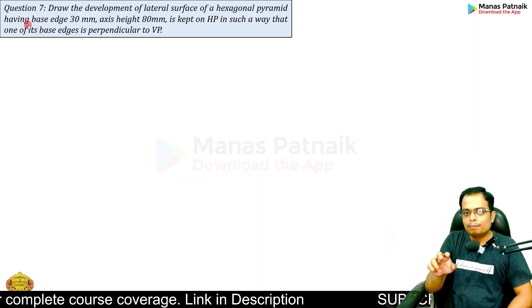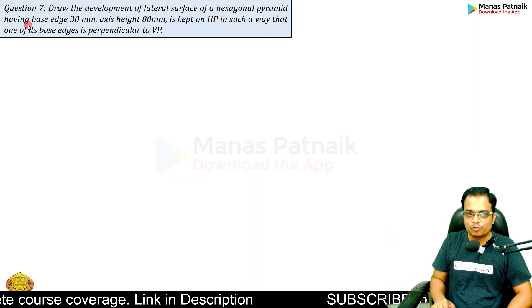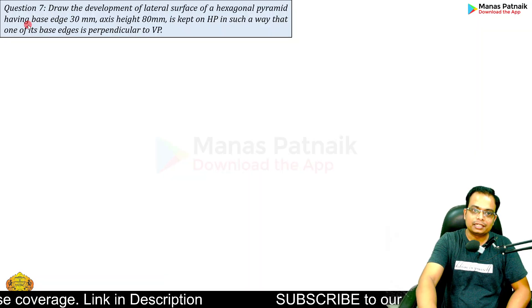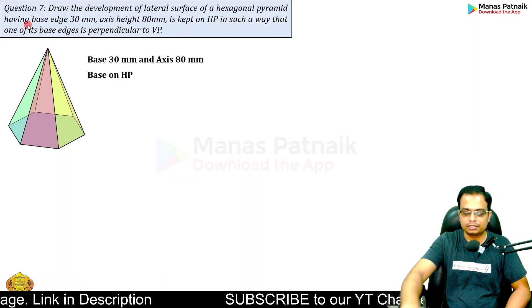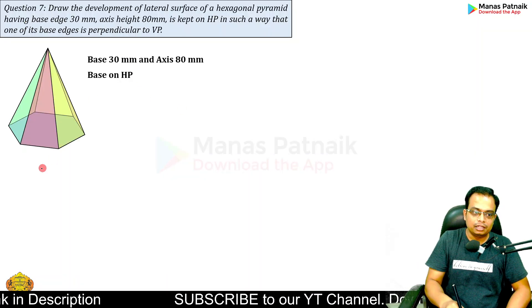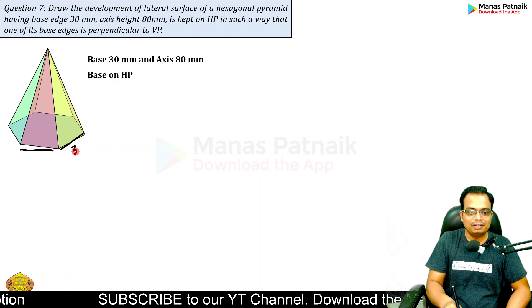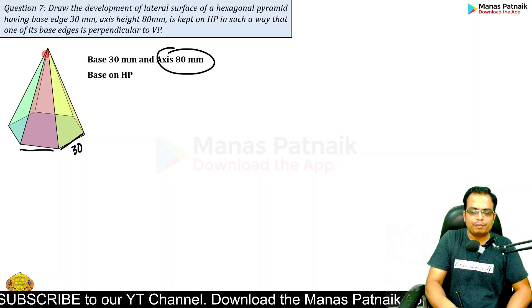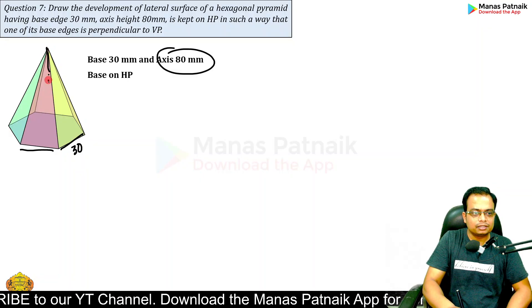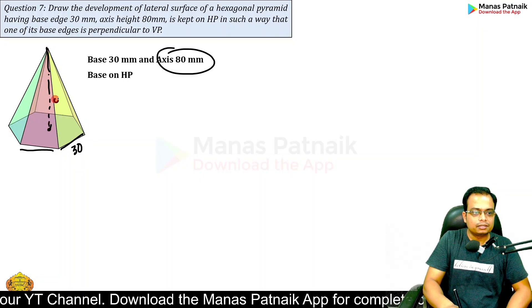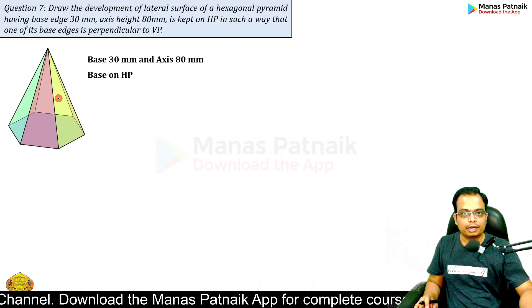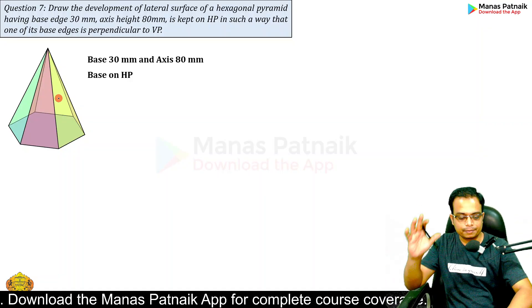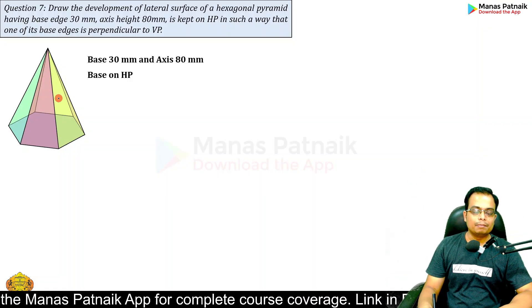First, we're talking about a hexagonal pyramid. The dimensions are base edges all 30 millimeters each. Secondly, the height of the pyramid or the length of the axis is equal to 80. Remember: 30, 80. Base is on HP.